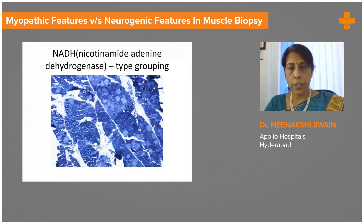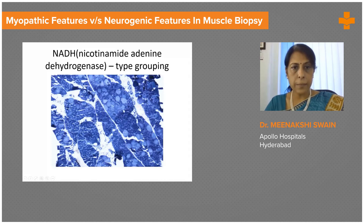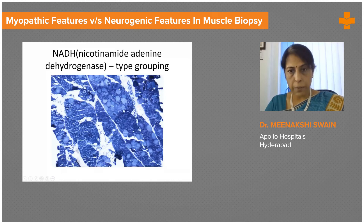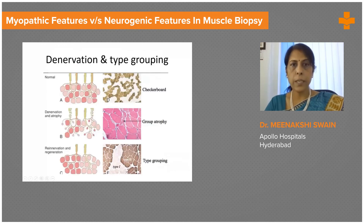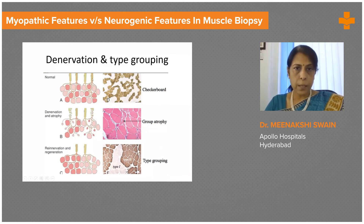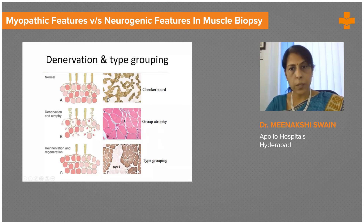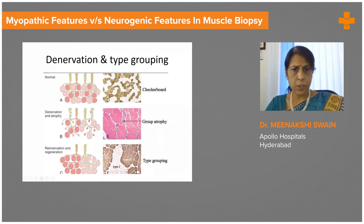Another feature of neurogenic atrophy is seen in enzyme stains. This is one of the enzyme stains we routinely use in the muscle lab — nicotinamide adenine dinucleotide dehydrogenase, or NADH stain. These stains show what is known as type grouping — groups of similar fiber types — so you see groups of dark fibers and groups of light fibers. In a normal muscle, fibers are randomly distributed giving the popular checkerboard appearance on ATPase and other enzyme stains.